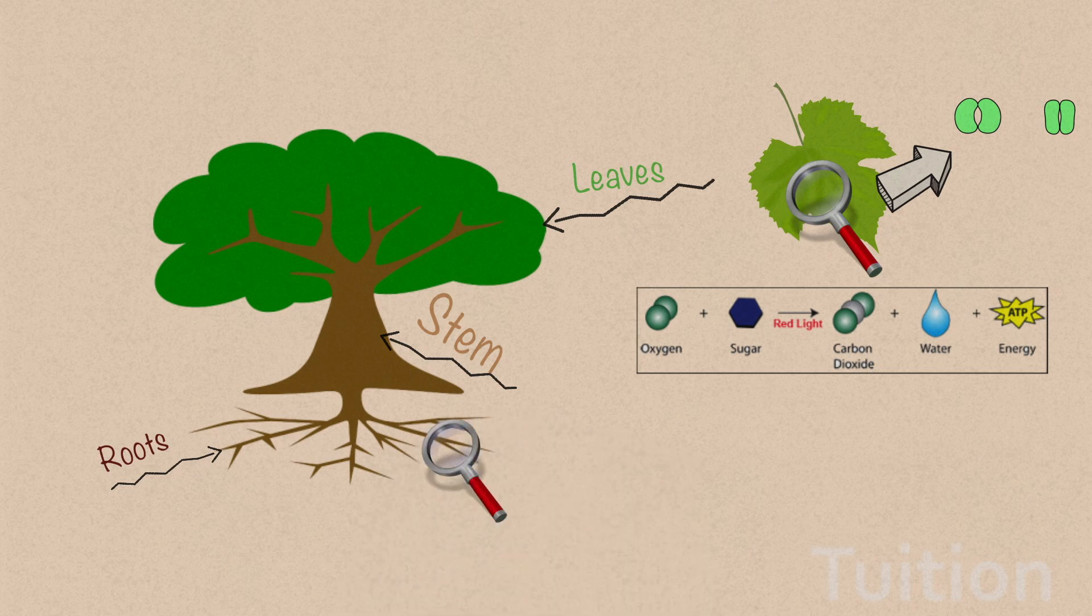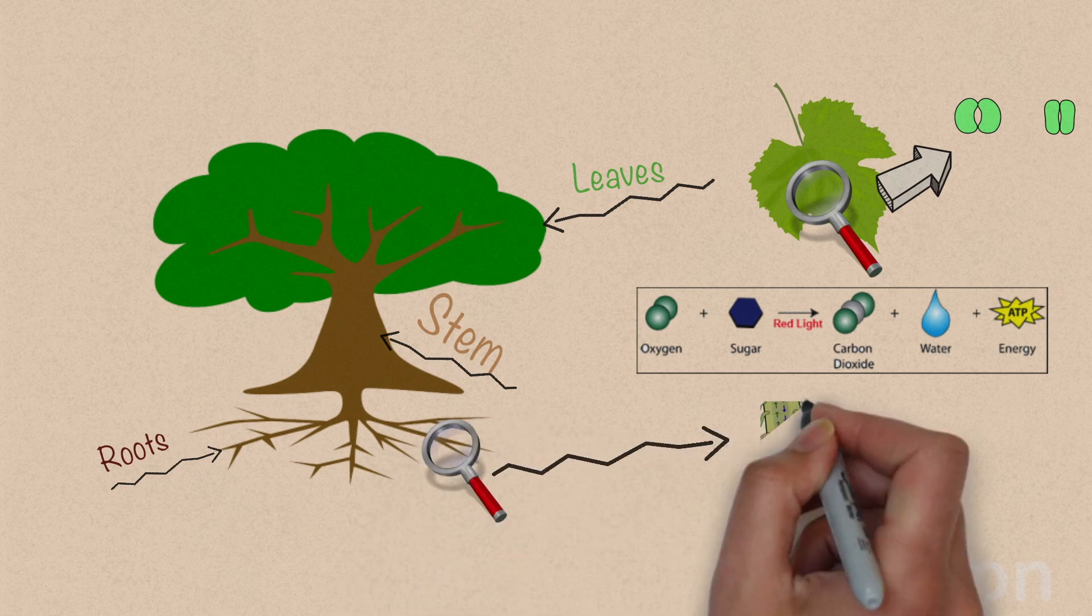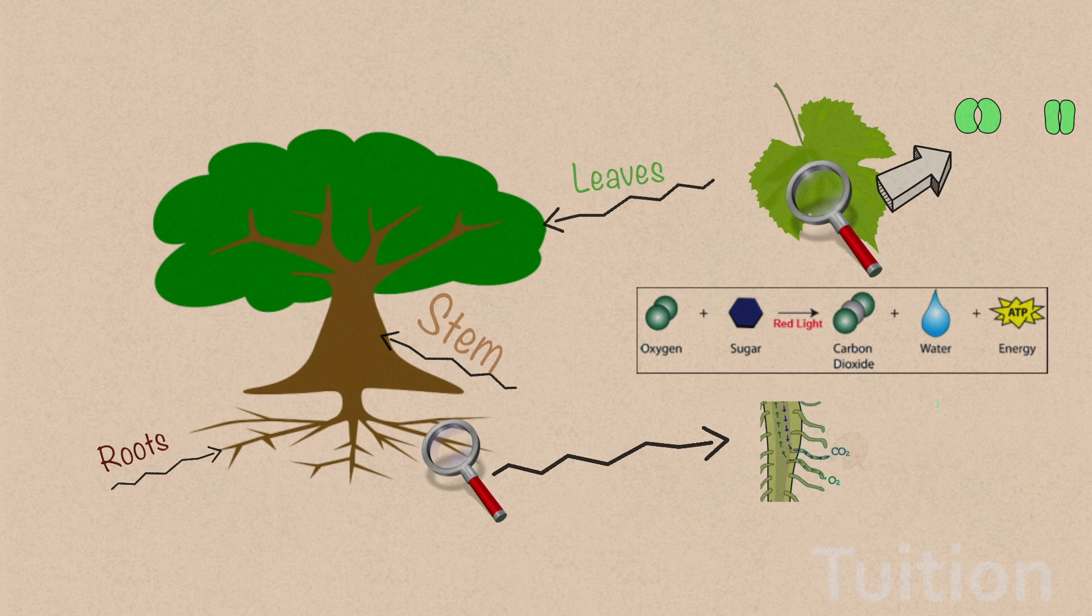Similarly, roots of plants take in air from the air spaces present between the soil particles. Thus the oxygen absorbed through roots is used to release energy, and the energy is utilized for the transport of minerals and salts from the soil.